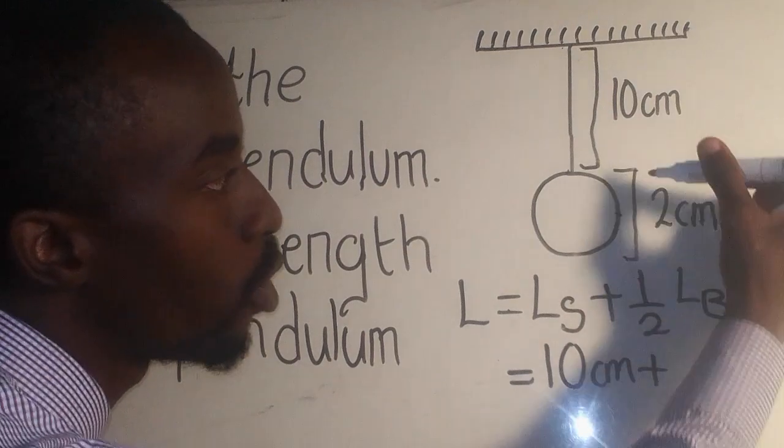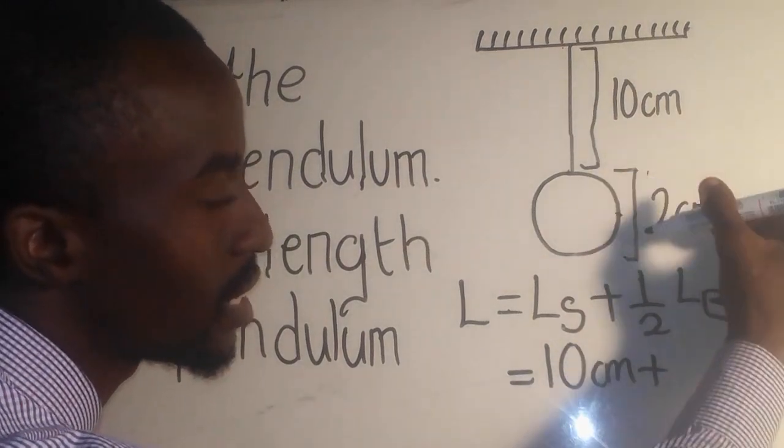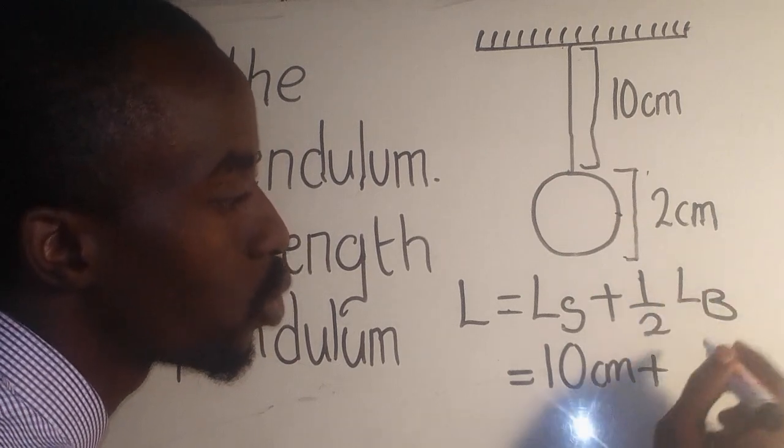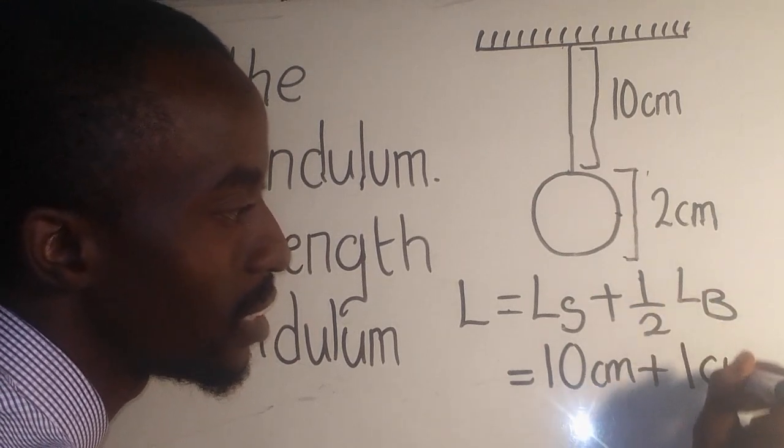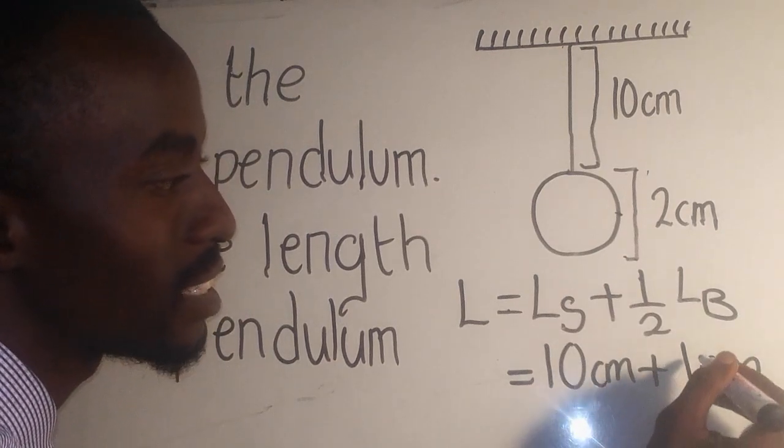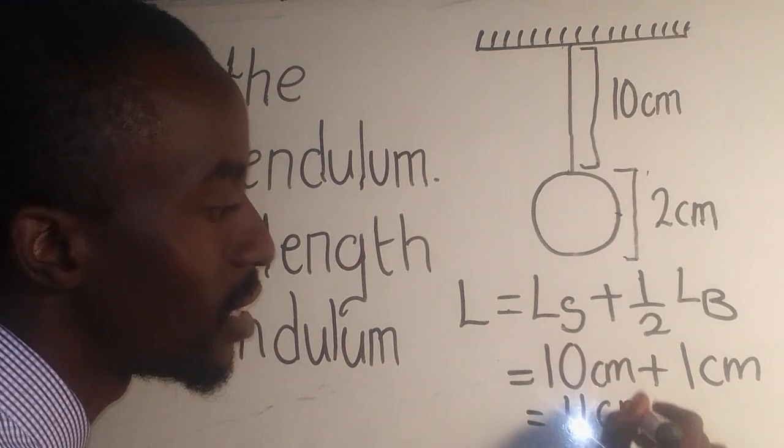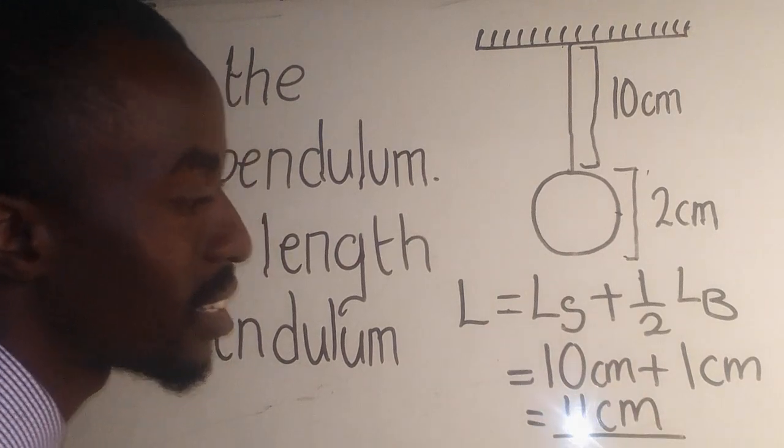The length of the bulb is this 2 here, as you can see. So it would be 1 over 2 times 2, which is going to give me 1 centimeter. So 10 centimeters plus 1 centimeter is going to give me 11 centimeters, which is the answer.